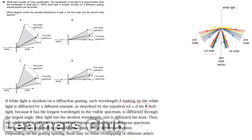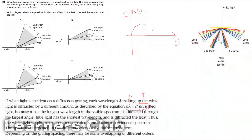From this formula, if lambda is greater, then sin theta will be greater. If you consider a graph of sine theta against theta, your graph will increase and decrease. So sine theta increases up to theta equals 90 degrees.